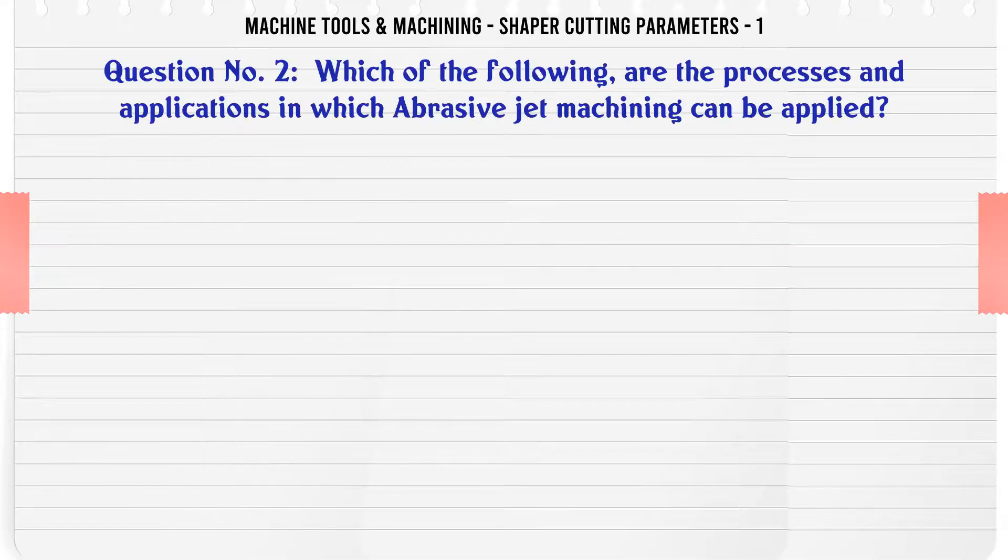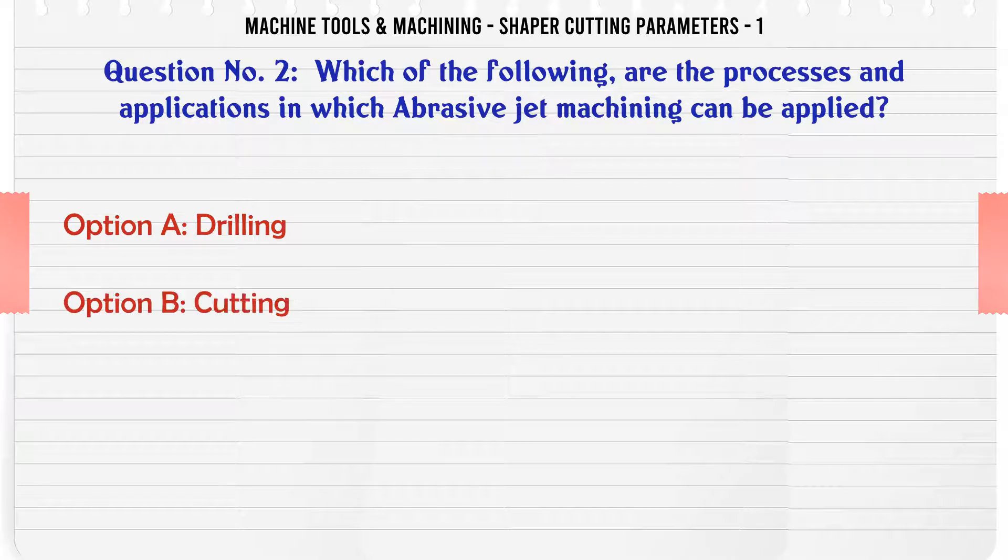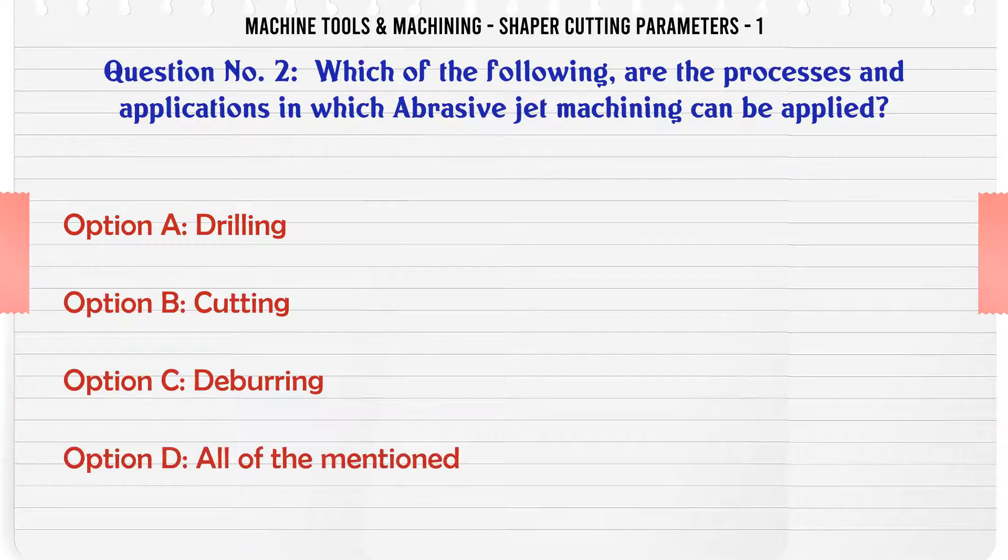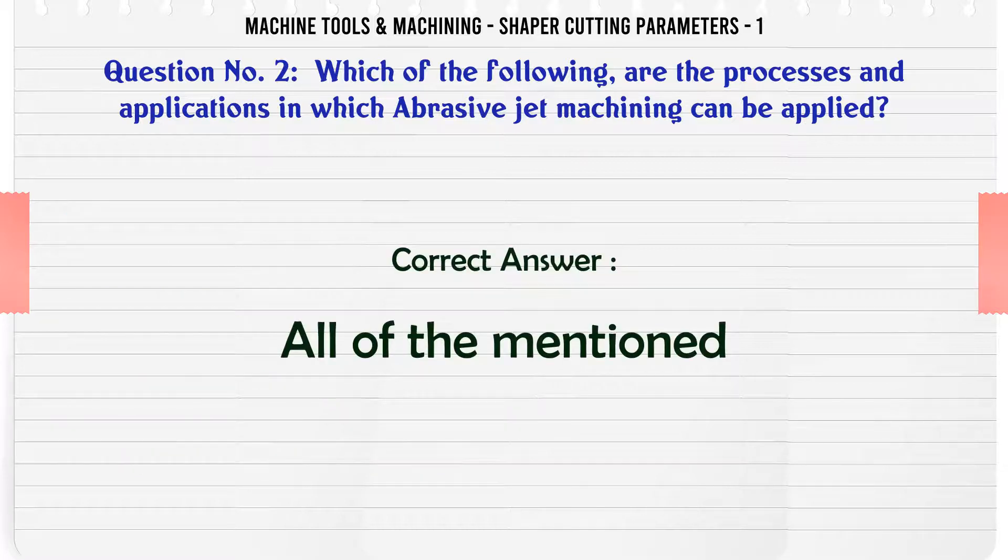Which of the following are the processes and applications in which abrasive jet machining can be applied? A. Drilling. B. Cutting. C. Deburring. D. All of the mentioned. The correct answer is: All of the mentioned.